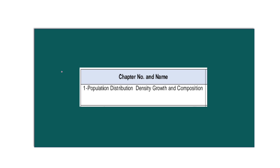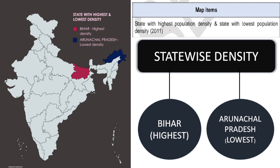This is Chapter 1 — Population Distribution, Density, Growth and Composition. So it's given: state with highest population density and state with lowest population density according to 2011 census. State-wise density — highest is in Bihar and Arunachal Pradesh is lowest. We can see Bihar in pink color as highest, and Arunachal Pradesh in blue as lowest density. So this was the map item from Chapter 1.